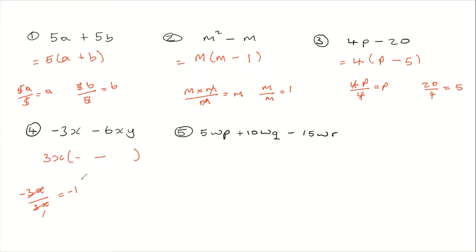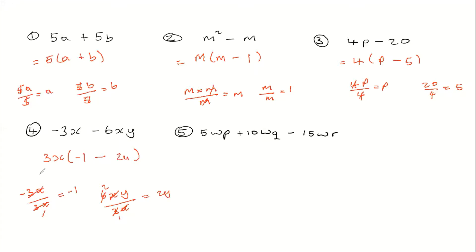And here, what we have is 6xy divided by 3x. Clearly, x in the numerator will cancel x in the denominator. 3 in the denominator: 3 goes into 6 two times. So what you're left back with is just 2 times y, which is just 2y. So here you will put 2y, and the factorized form is 3x(negative 1 minus 2y).